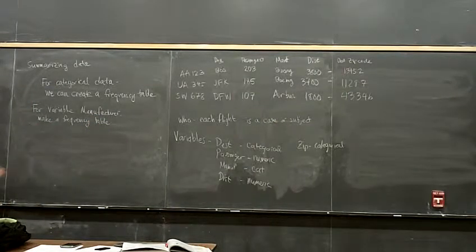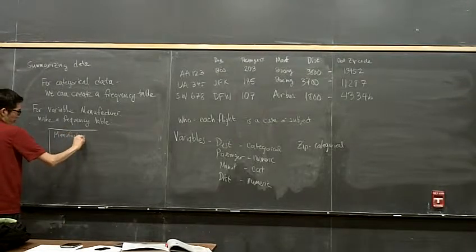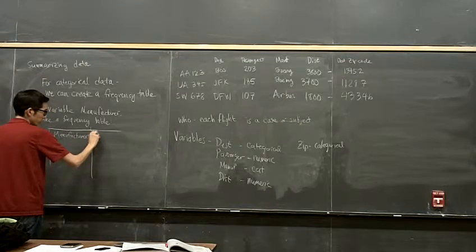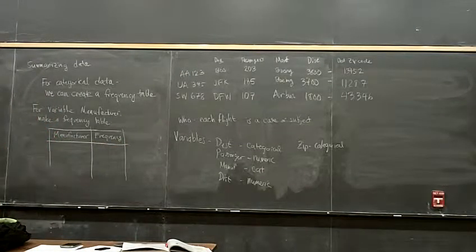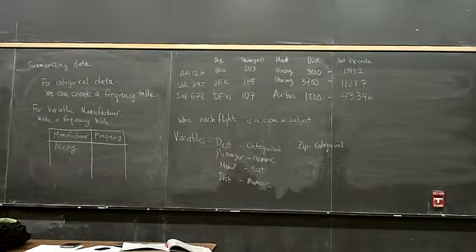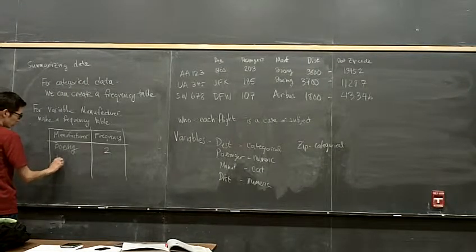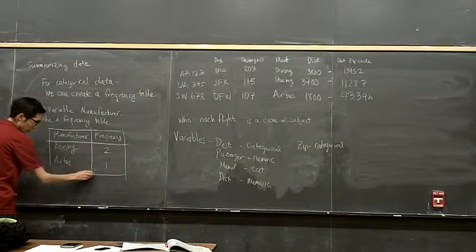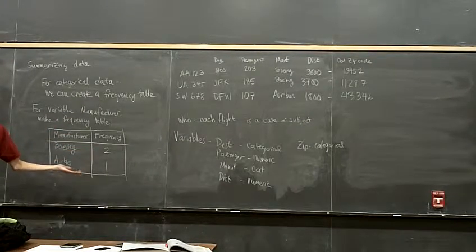The frequency table looks like this: manufacturer and frequency. One of the manufacturers is Boeing — in my dataset, how many flights have airplanes made by Boeing? Two. So my frequency is two. And the other one is Airbus — one flight has a plane made by Airbus, so frequency is one.